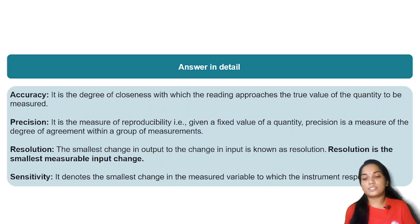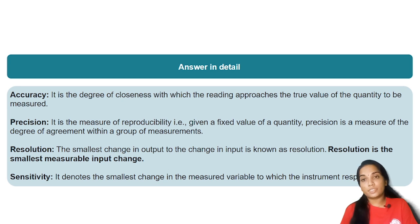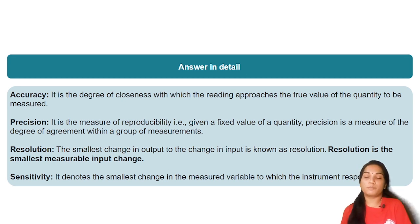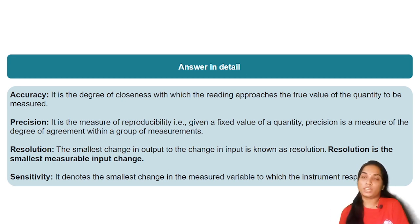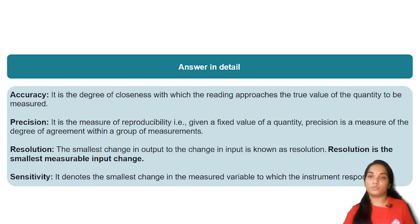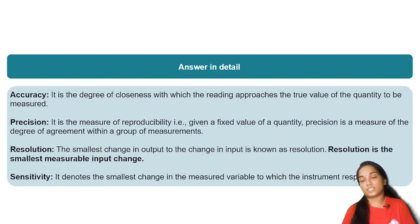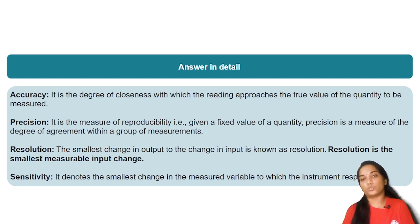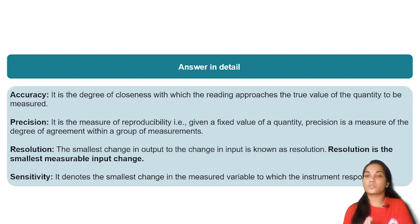Accuracy is the degree of closeness with which the reading approaches the true value of the quantity to be measured. That is, the observed value and the true value are the same — closeness is accuracy.